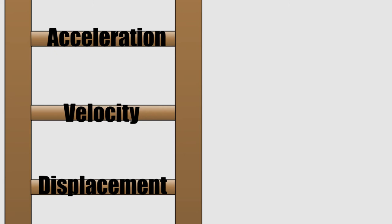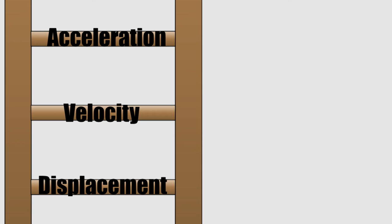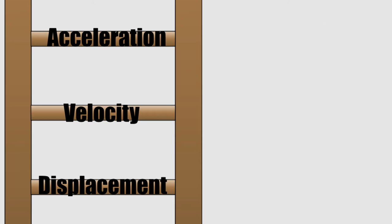We can now combine everything we've learned so far into one diagram using acceleration, velocity, and displacement. You can arrange the diagram as if it was a ladder with acceleration on top, velocity in the middle, and displacement at the bottom. Then you use calculus to go between the different rungs on the ladder. You use derivatives to go up the ladder — for example, the derivative of displacement is velocity, and the derivative of velocity is acceleration. Or, you can use integration to go down the ladder — the integration of acceleration is velocity, and the integration of velocity is displacement.